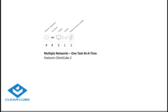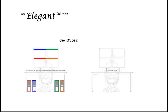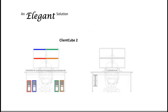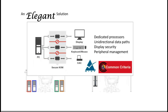Let us show you how this comes together. First, we take a unique package — ClientCube 2 — which contains a NIAP-certified secure KVM. For information assurance officers, the switch has certifications for desktop operation at the highest levels, with Common Criteria Protection Profile version 2.1, Evaluation Assurance Level 2+, and with Peripheral Sharing Switch Protection Profile 2.1.